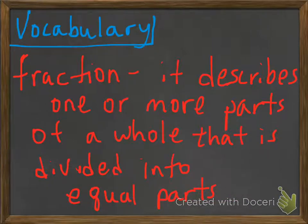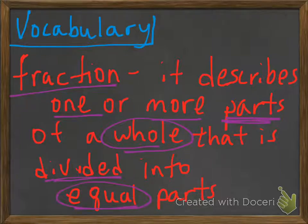Let's take a look at some vocabulary. First of all, fraction — it describes one or more parts of a whole that is divided into equal parts. One part cannot be smaller or larger than the other. Every single part that you break up the whole into must be exactly the same size in order for it to be a fraction.